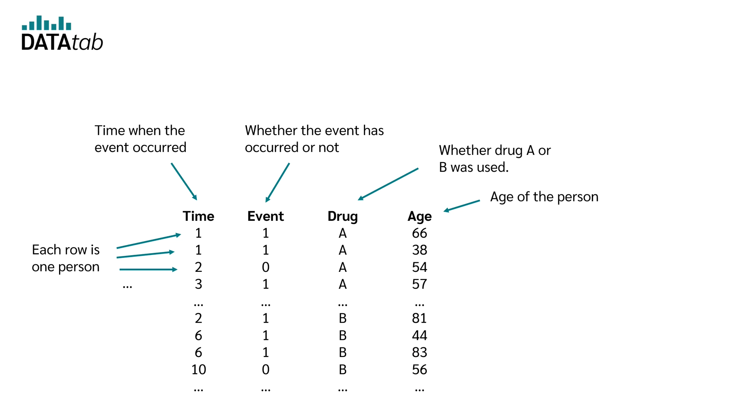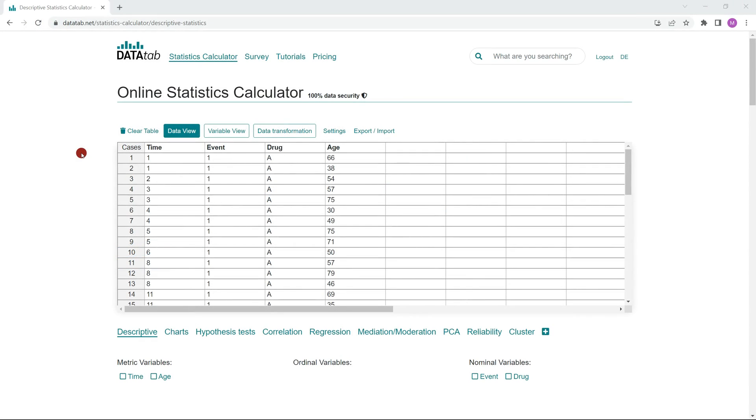In the first step, we must now calculate the Cox regression, which we do online with DATAtab. Then we go through how to interpret the results. To calculate the Cox proportional hazard survival regression, we simply go to datatab.net and copy our data into this table. Just copy and paste as in Excel.